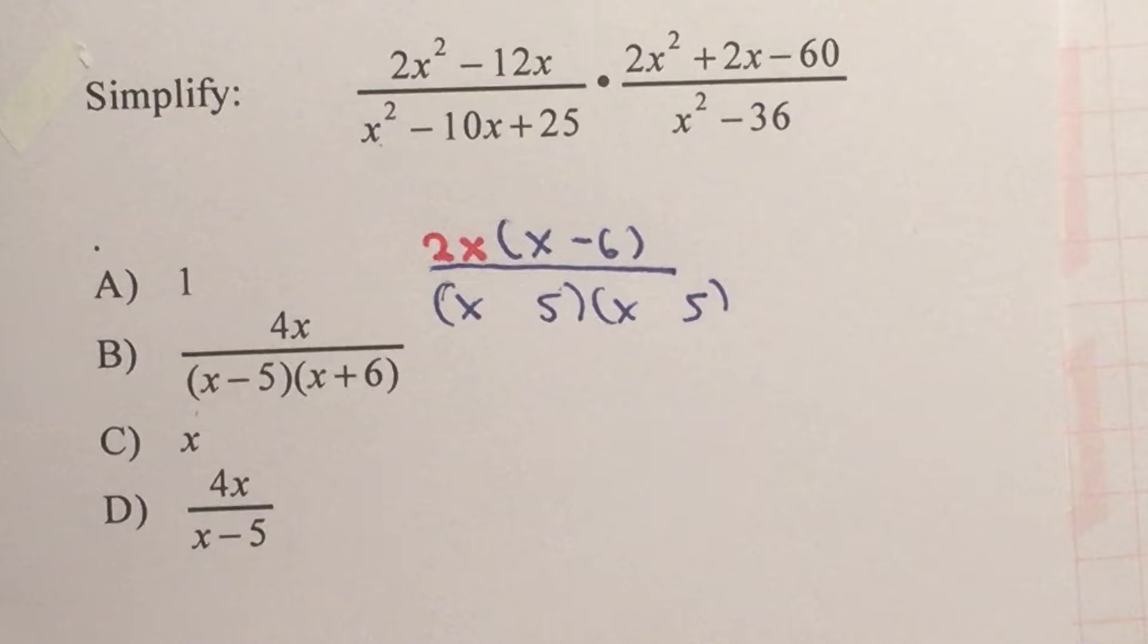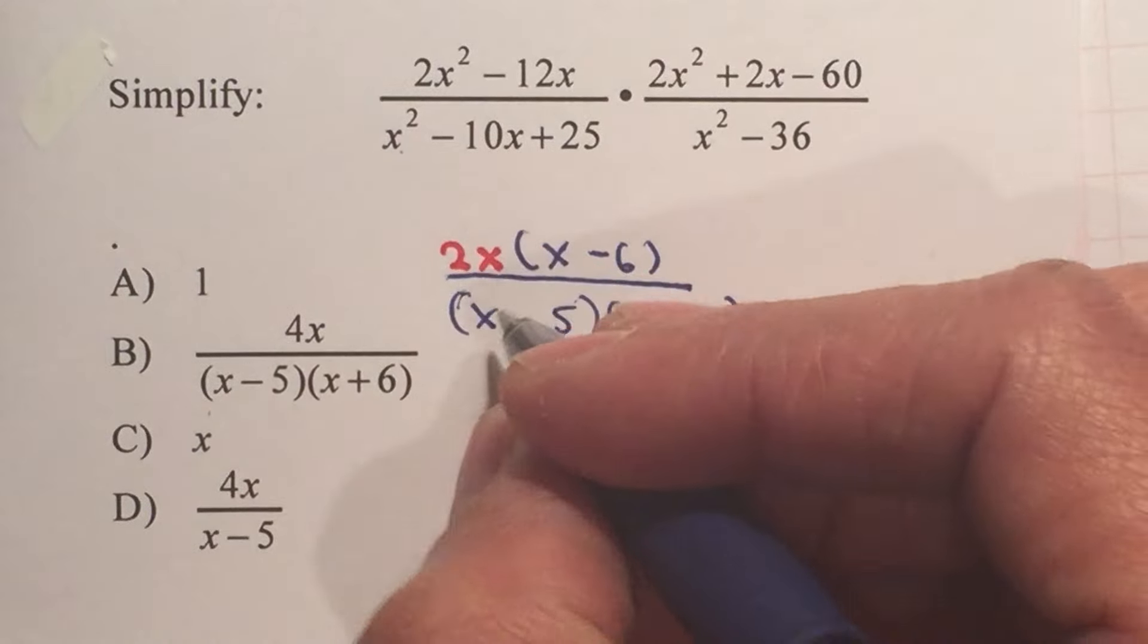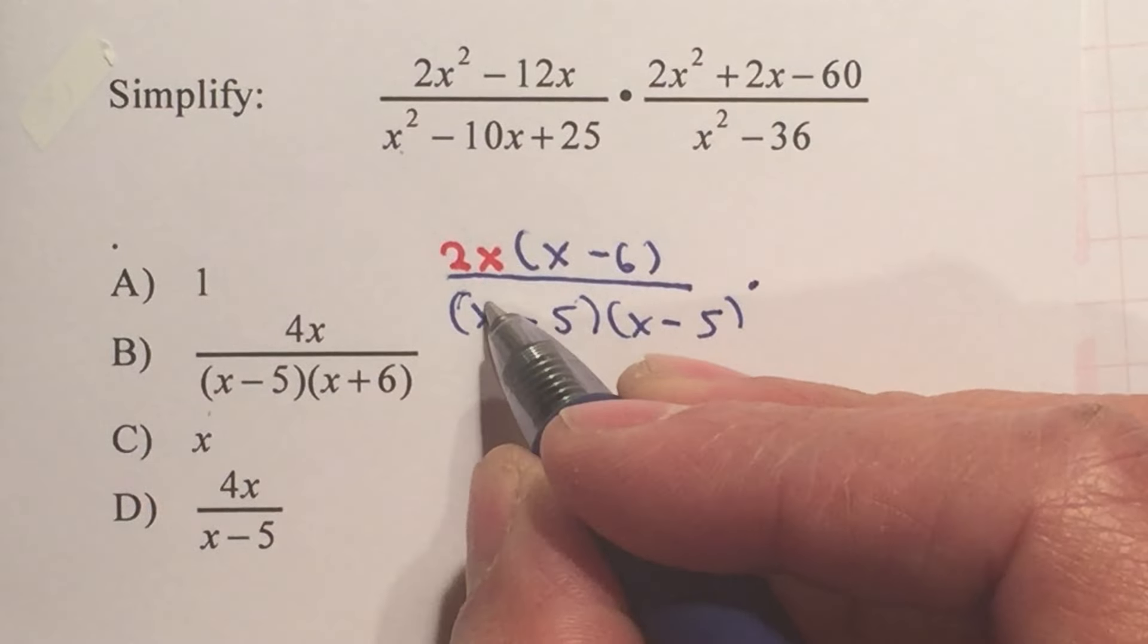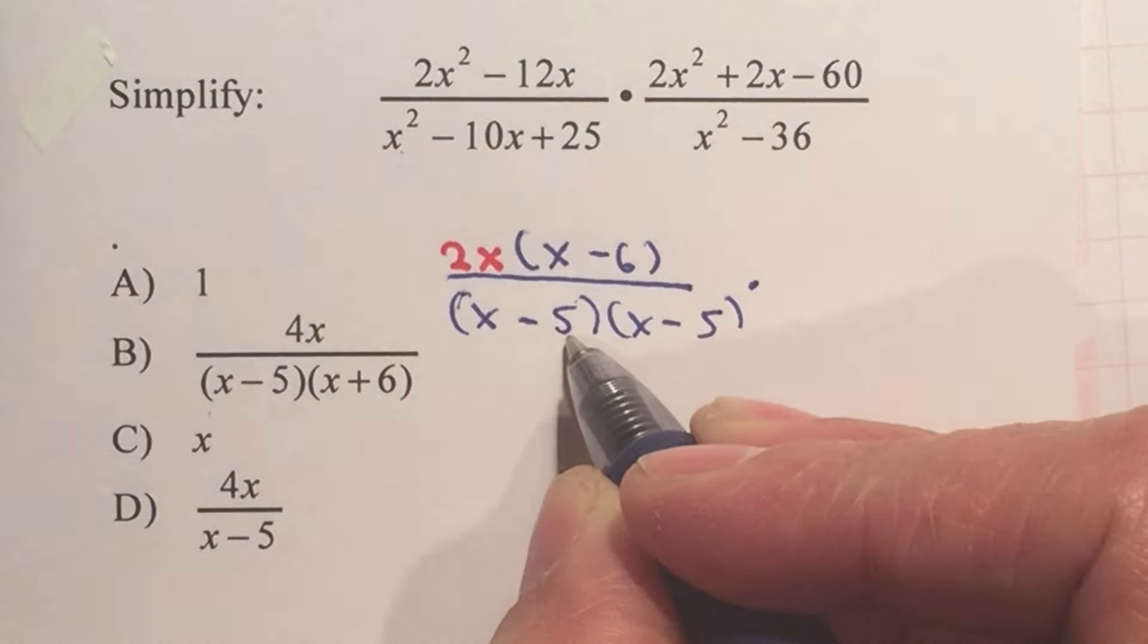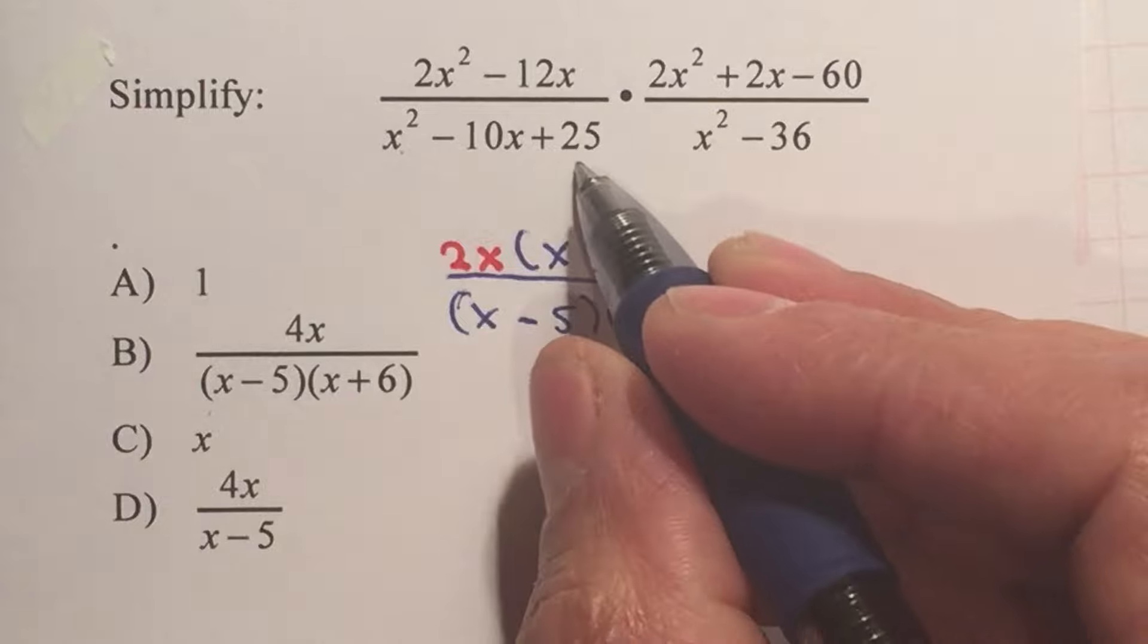This is a positive so they need to have the same sign. And they need to add up to a negative 10 so therefore they both should be negative. If you multiply it out it gives you x squared, negative 5x and negative 5x is negative 10x and positive 25.